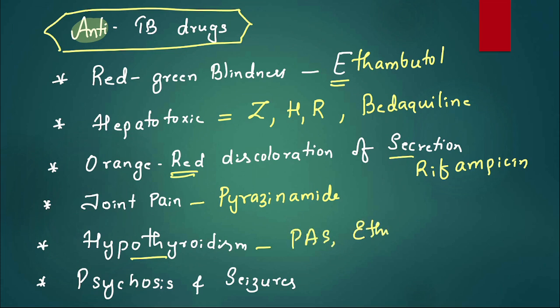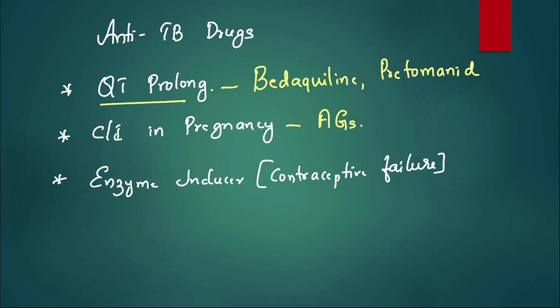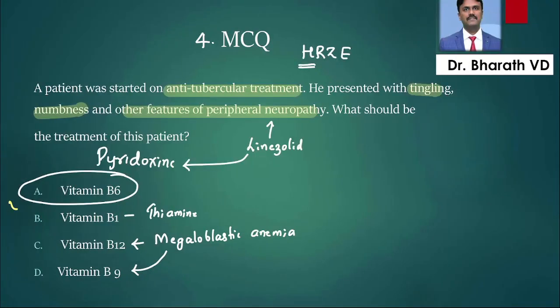Hypothyroidism by PAS (para-aminosalicylate) and ethionamide. Psychosis and seizures can be seen with the drug cycloserine and isoniazid. These are all high-yielding points. Which anti-TB drug can cause QT prolongation? The name is bedaquiline, a new drug for tuberculosis. Then pretomanid, delamanid - they also can cause QT prolongation. What is absolutely contraindicated in pregnant women? Repeatedly tested is aminoglycosides: streptomycin, amikacin, kanamycin, capreomycin. What is the enzyme inducer which can lead to contraceptive failure? The name is rifampicin. That is about anti-TB drugs. Most important point coming back: the treatment of peripheral neuropathy by isoniazid can be managed with pyridoxine, that is B6.